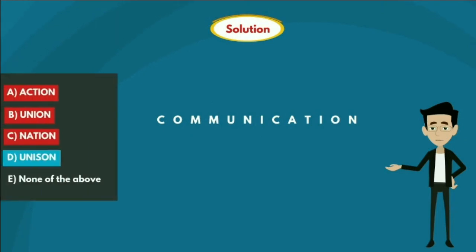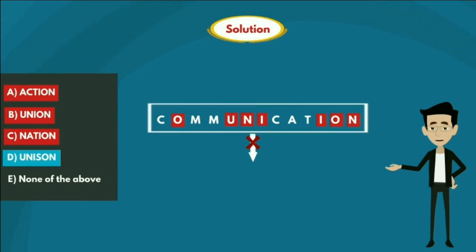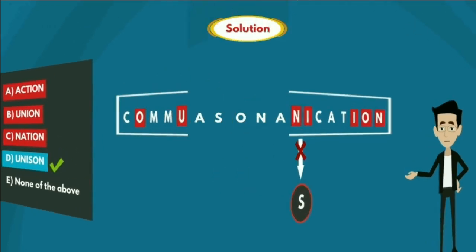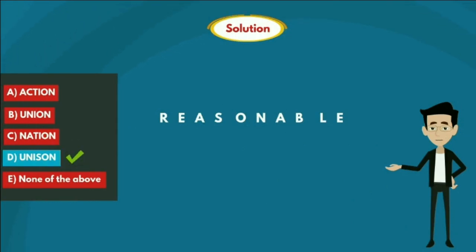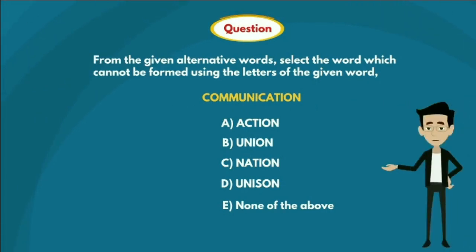Option D: U-N-I-S-O-N. If we observe, the letters U-N-I-O-N are in the given word communication, except the letter S. So this is the word which cannot be formed using the letters of the given word, communication. So option D is true, and the answer is option D: U-N-I-S-O-N.